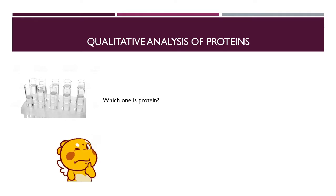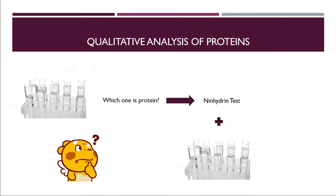So what we're going to do is take a compound called ninhydrin, and the test we're going to perform is called the ninhydrin test. When we put the ninhydrin compound in these test tubes, whichever test tube contains proteins will change the color to purple.